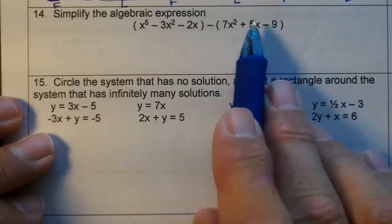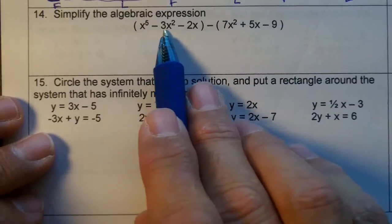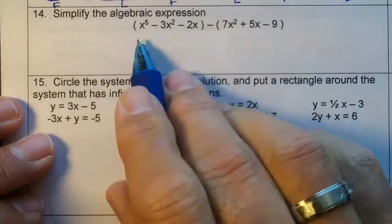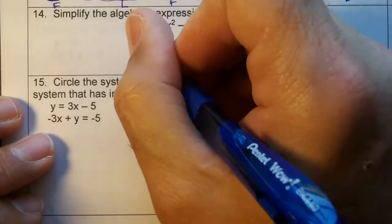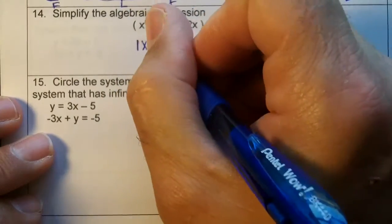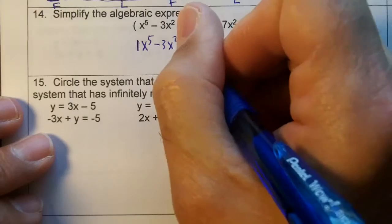So we're going to rewrite the problem without the parentheses. This polynomial won't change, and I'm going to go ahead and put a 1 here so we won't forget it. 1x to the 5th minus 3x squared minus 2x.